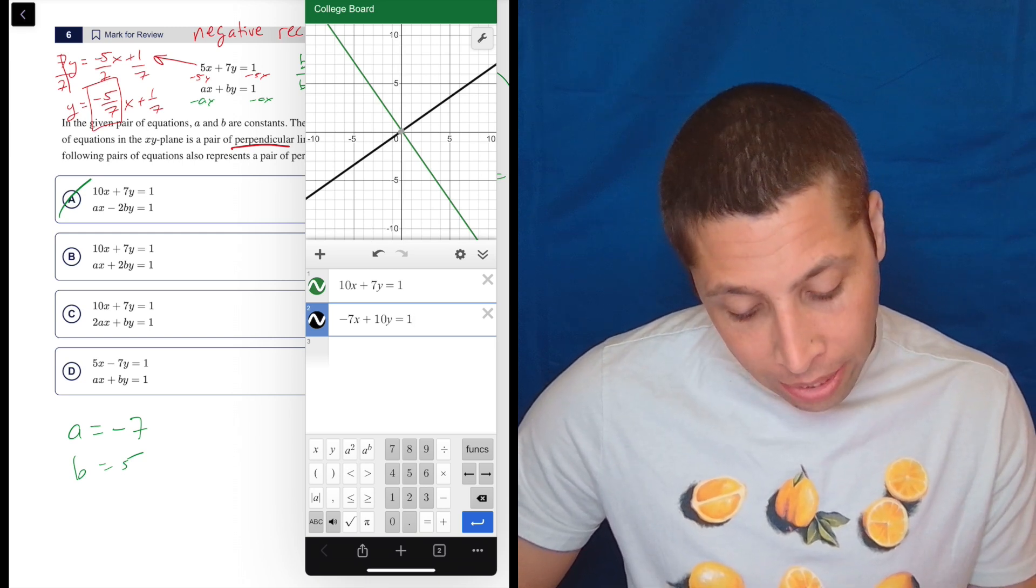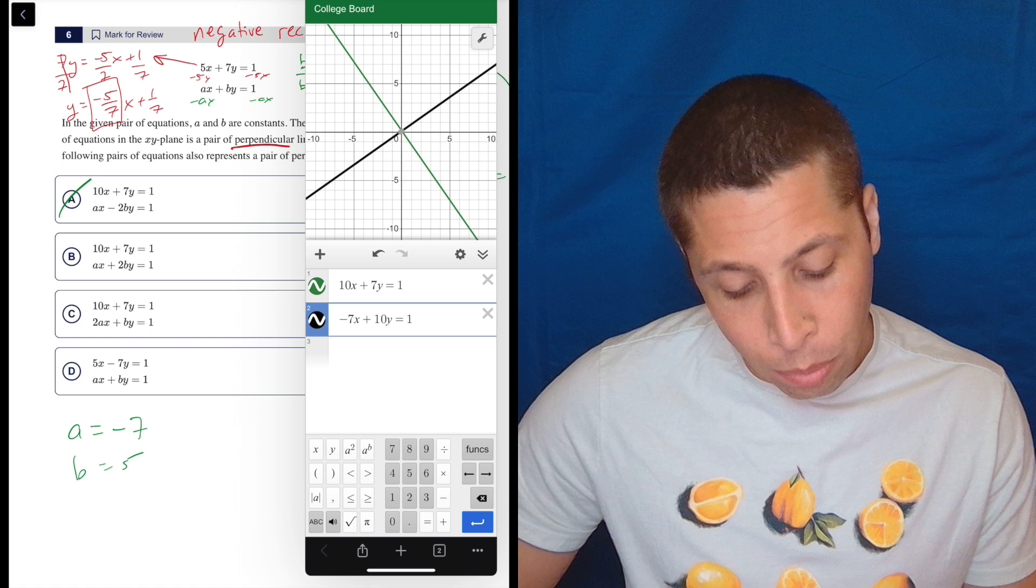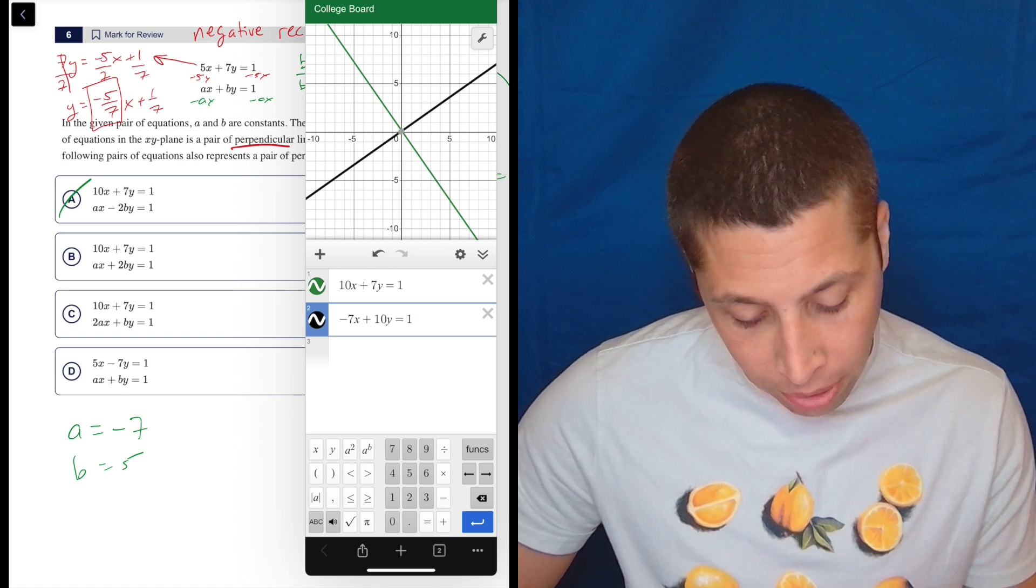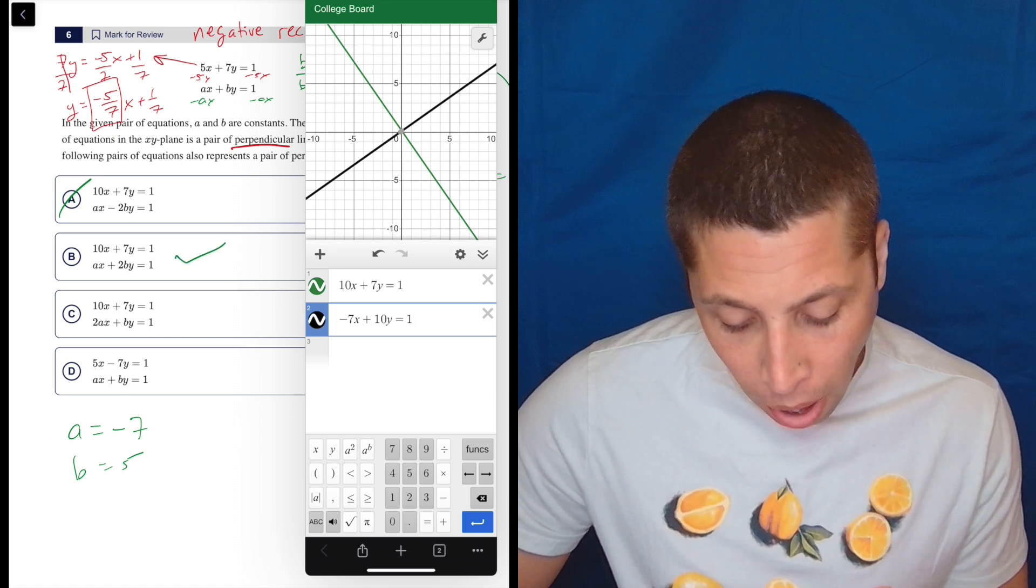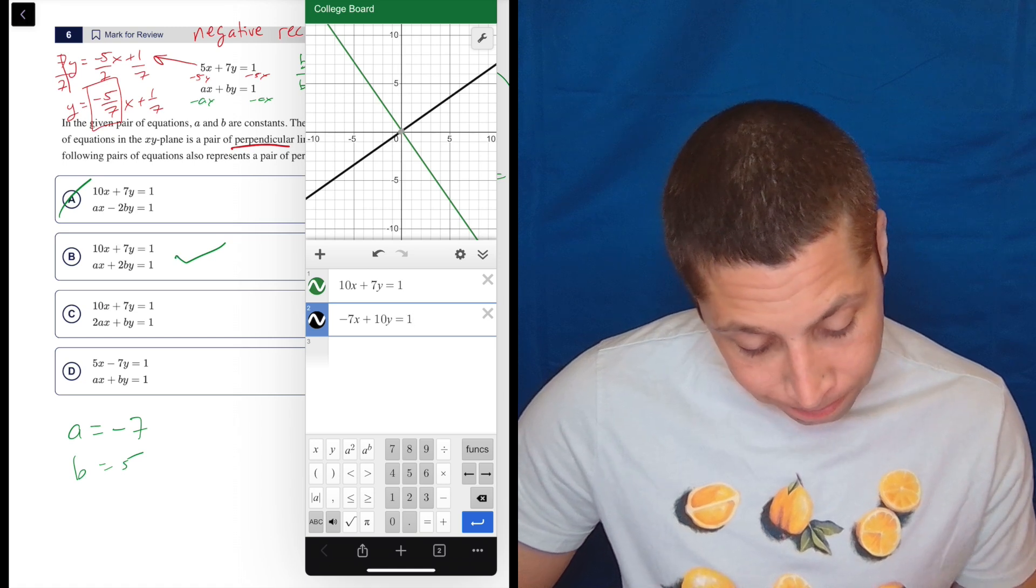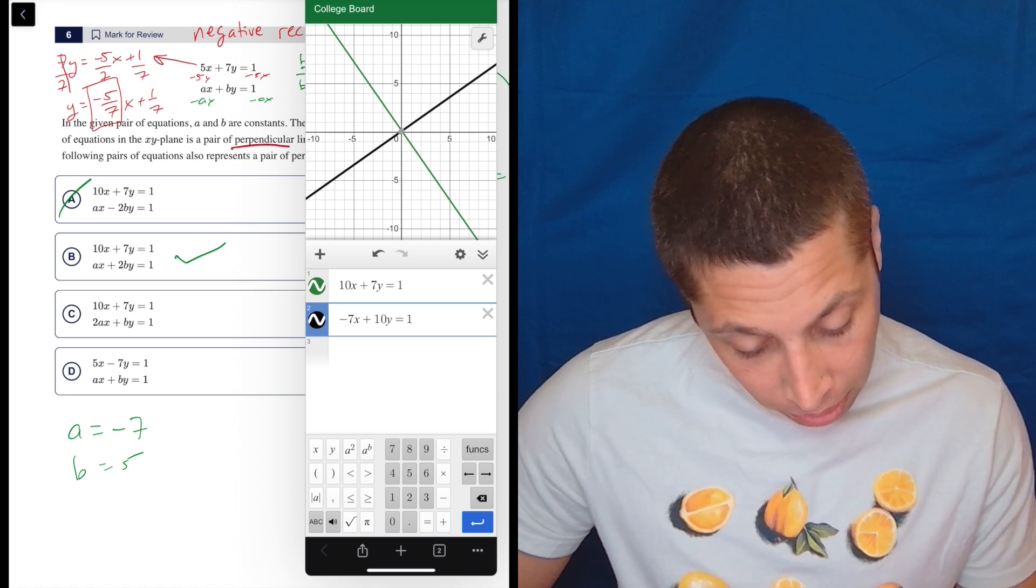So I would say that that's probably it. And I like that the two things are switched with the negative in one place and not in the other. And it wouldn't really have mattered if I did it the other way, I'm pretty sure. So this is probably going to be the answer. I could try the others just to be sure. I mean, it looks perpendicular.